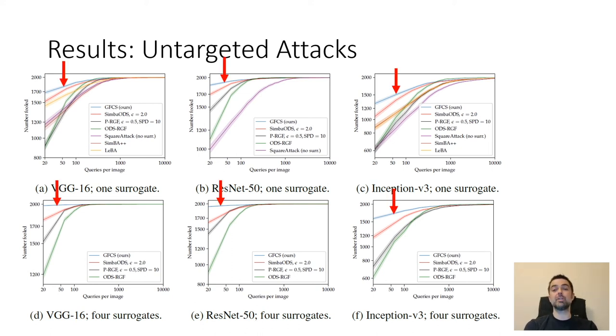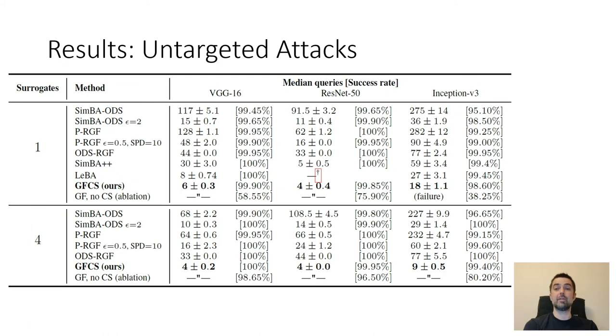A large fraction of images are fooled in a very low number of queries, so to get a view of that we're going to look at the same results as a table of median query counts and that looks like this. What you're seeing here is that GFCS solves most of the problem using just a handful of queries and that's while keeping the overall success rates very high.